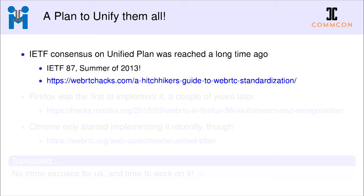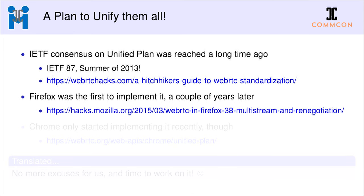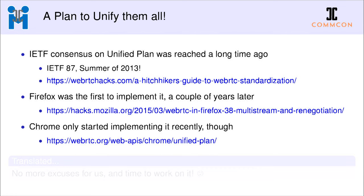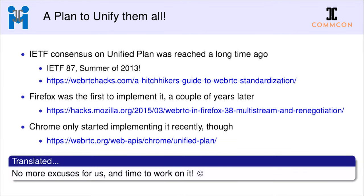More than five years ago it was decided that unified plan was the way to go, even though it took a long time for Chrome to actually implement it — they stuck to plan B for a long time. Firefox implemented it very early, a couple of years later, but Chrome only started implementing it recently. Now that Chrome has implemented it and Safari is using it as well, we really didn't have any excuse — it was time for us to start implementing this.